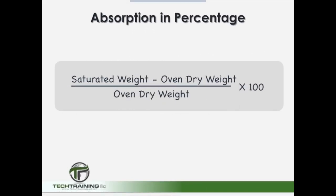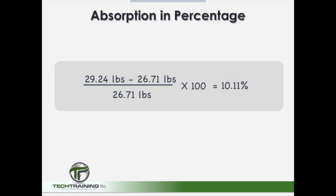Next, let's calculate our absorption in percentage. To do this, we take the saturated weight of the unit minus the oven dry weight of the unit, and divide this number by the oven dry weight of the unit, and multiply it by 100. Plugging in our numbers: 29.24 pounds minus 26.71 pounds, divided by 26.71 pounds, times 100, for an absorption of 10.11 percent.